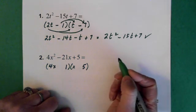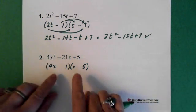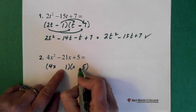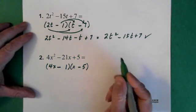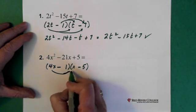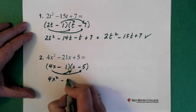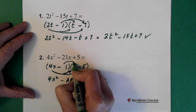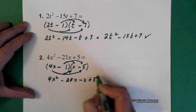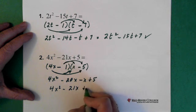Now I have to figure out what the signs are. I notice a plus 5, so those two signs are the same. But I'm also noticing the minus 21, so I'm assuming the signs are minus. Then I multiply through: 4x times x is 4x squared, 4x times minus 5 is minus 20x, and this one is minus x, and here we have plus 5. So we have 4x squared minus 21x plus 5. Bingo.